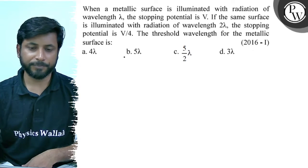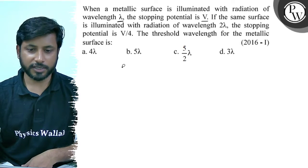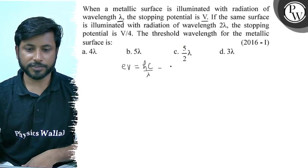Let's solve this. Initially, what is our incident light wavelength lambda and stopping potential V? So this equation comes from eV equals to hc by lambda minus phi.